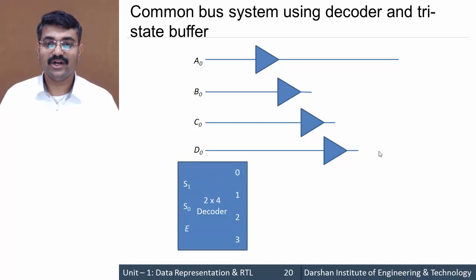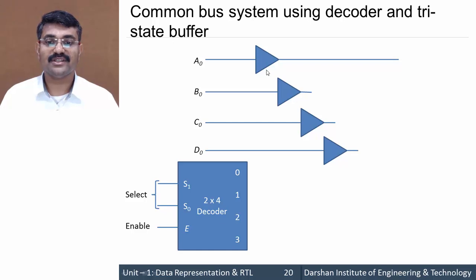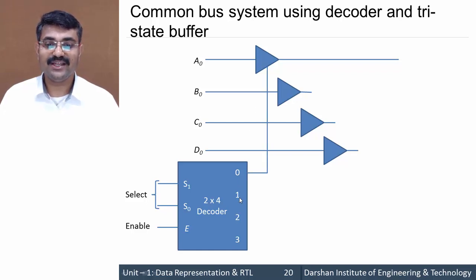We use a 2×4 decoder. A two-to-four decoder means two input lines and four output lines; based on the input lines, the corresponding output line becomes high. The select lines are S1 and S0, and there is one enable input E for the decoder's working. The output from this decoder is connected to the third state — the control input — of the tri-state buffers. The zeroth line connects to the tri-state buffer for A0, the first line to B0, the second line to C0, and the last line to D0.